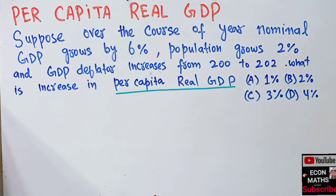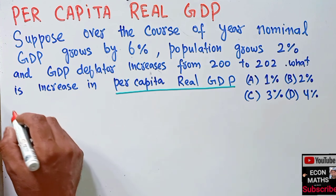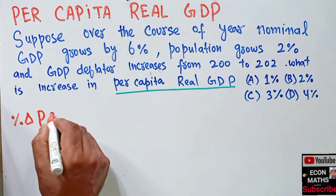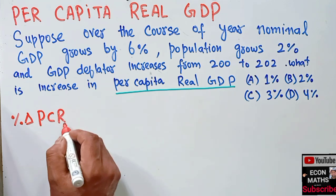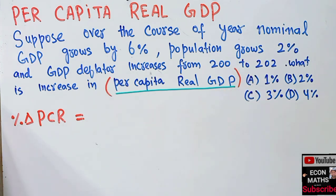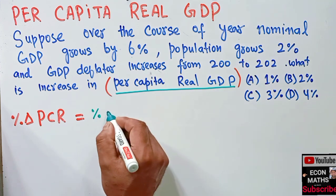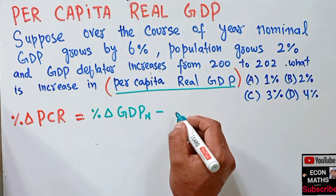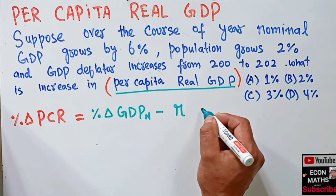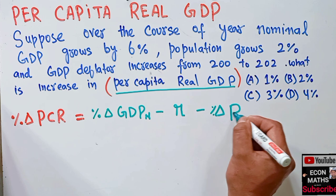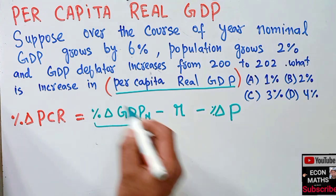The formula for calculating the increase in per capita real GDP is: percentage change in per capita real GDP equals percentage change in nominal GDP minus the inflation rate (denoted by π) minus the percentage change in population (denoted by P).